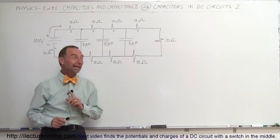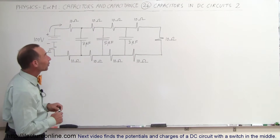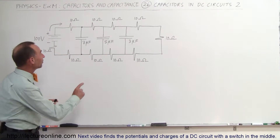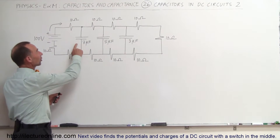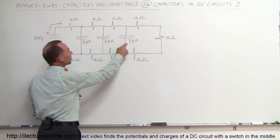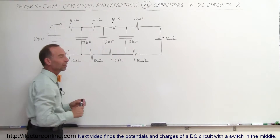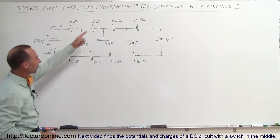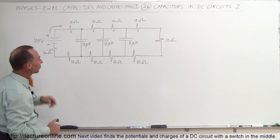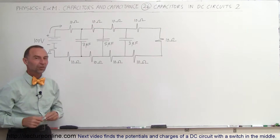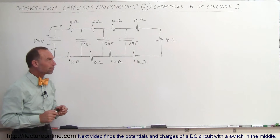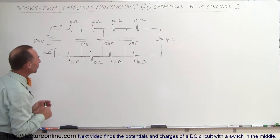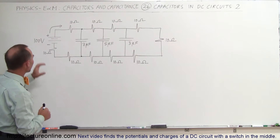Welcome to ElectronLine. In this example we're going to show you how to find the charge on each of the three capacitors and also the current through the circuit, through the resistors. How do we go about doing that?